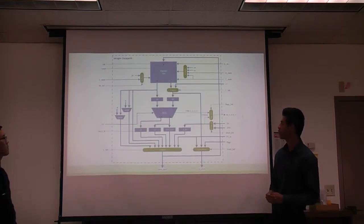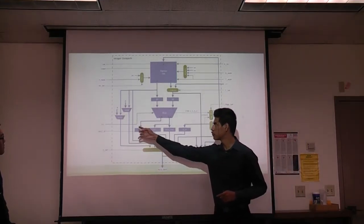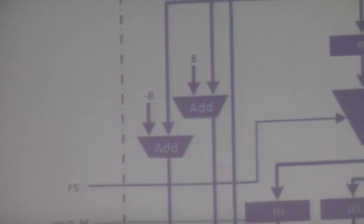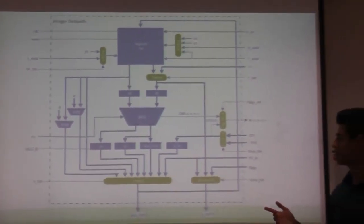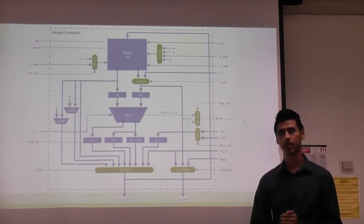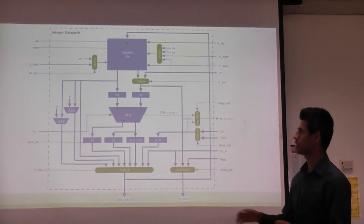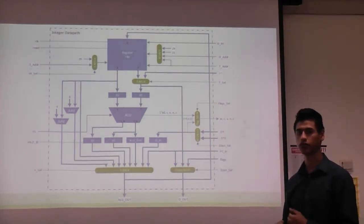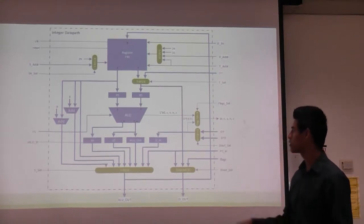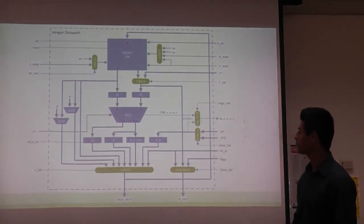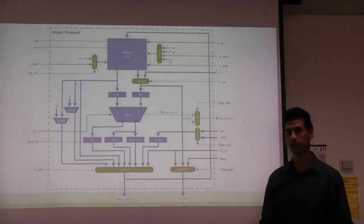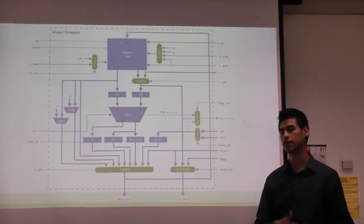Looking into the interior data path, we added two adders for implementing interrupts and return-from-interrupt. We save the program counter and the status of the flags into memory using a stack-style operation, keeping the ALU free for other operations simultaneously, while calculating the effective address to restore the program counter and flags. We also added MUXes to decide between data from I/O memory or data memory, and to select between flags from the ALU or restored flags from memory.